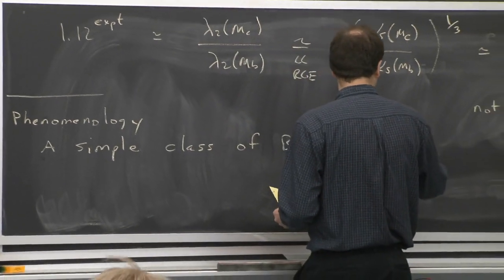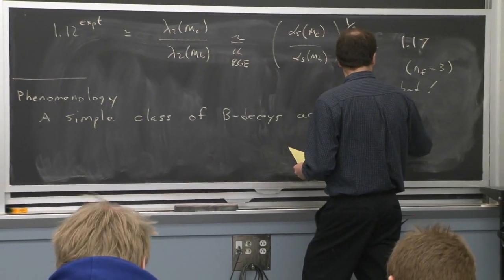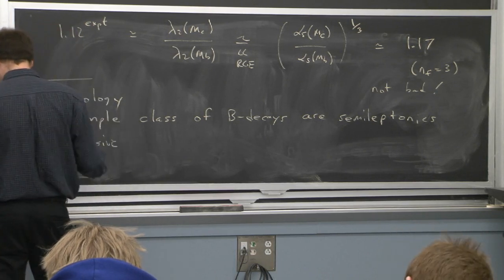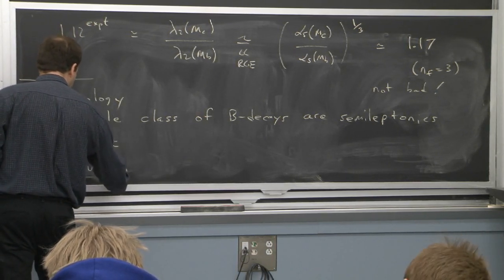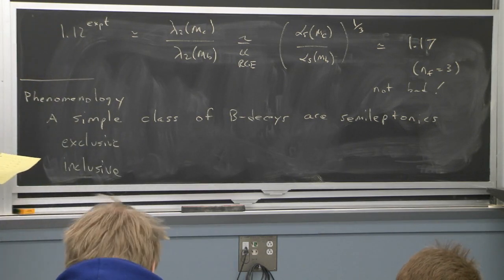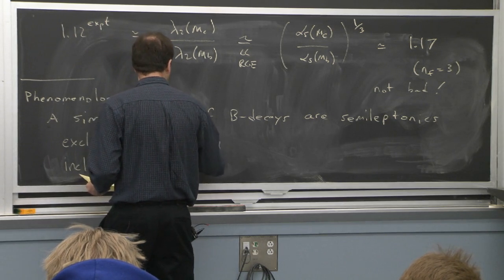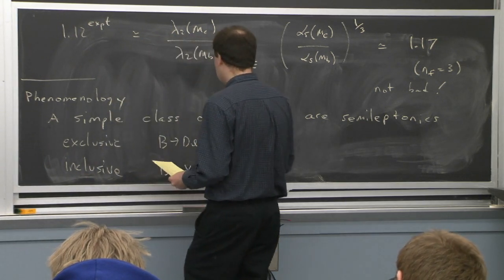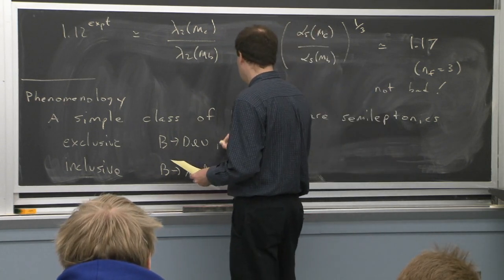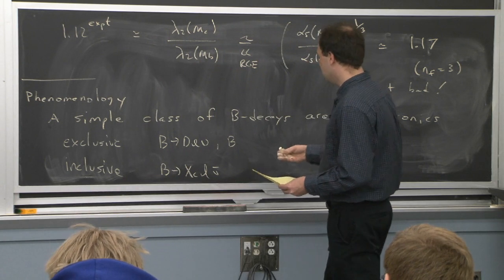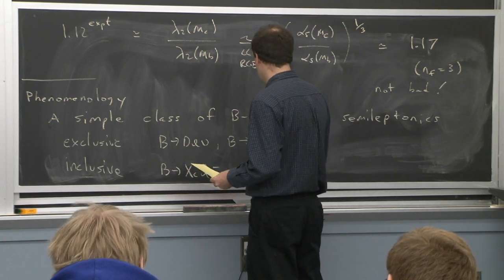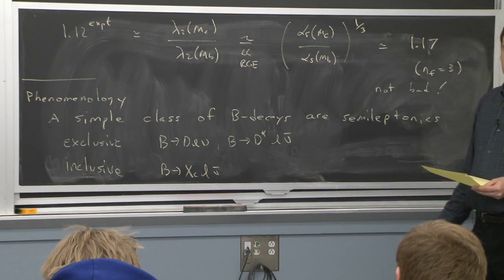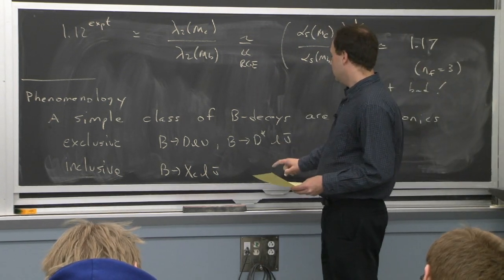There's other phenomenology we can do. I'll mention some of the most important. There's another class of predictions with a lot of predictive power. You can look at semi-leptonic decays — two different types: exclusive decays making transitions between meson states, and inclusive decays where you allow any charm state, not just the ground state, but also D pi, D star pi pi, and so on. Exclusive refers to a particular channel; inclusive refers to a sum over all channels.